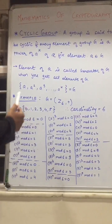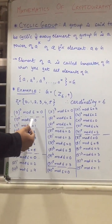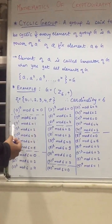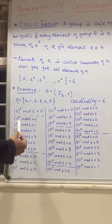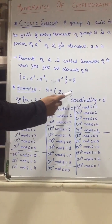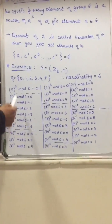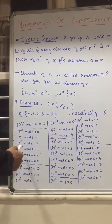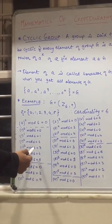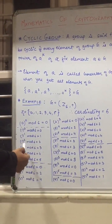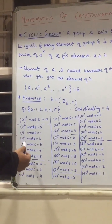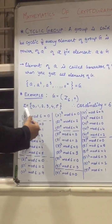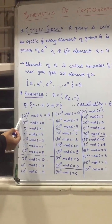Now let's take 1. So 1 raised to 0 mod 6 is equal to 0. 1 raised to 1 mod 6 is equal to 1. 1 raised to 2 means 1 plus 1, as the binary operator is addition, so 1 plus 1 mod 6 is equal to 2. 1 raised to 3 mod 6 is equal to 3. 1 raised to 4 mod 6 is equal to 4. 1 raised to 5 mod 6 is equal to 5. As you can see, all the elements of Z6 are getting generated by 1.